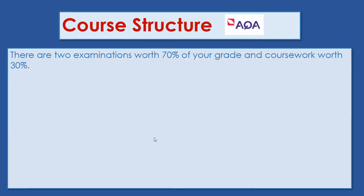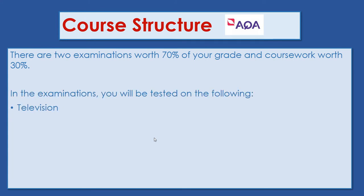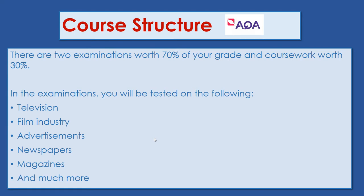Our course itself is split up into three parts. There are two examinations which make up 70% of your grade and there is coursework which makes up the final 30%. Within the exam itself, you'll be tested on the following areas such as television, film, advertisements, newspapers and magazines.